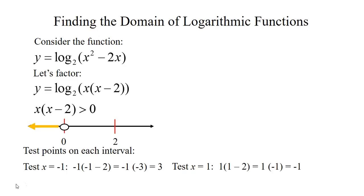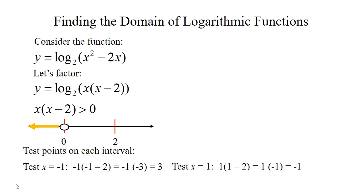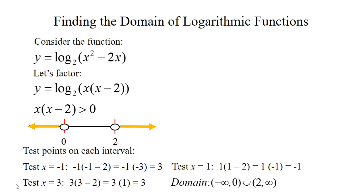Let's try a point between 0 and 2 — I tested x equal 1. At x equal 1 I got a negative, so everything on that interval is going to be negative and I'm not going to include it as part of the domain. Next I tested a point greater than 2 — I chose 3 and got positive 3. Everything on that interval gives two positives multiplied together, which is positive. So our domain is going to include everything from negative infinity to 0 and everything from 2 to infinity.